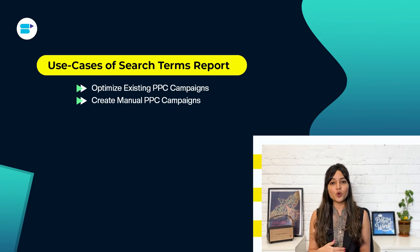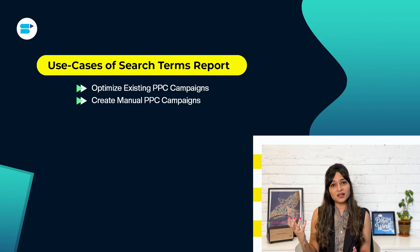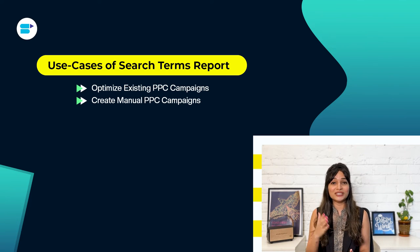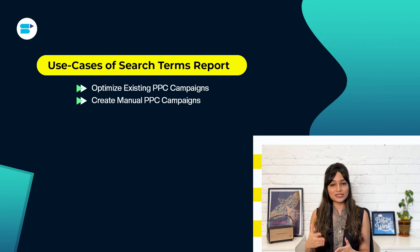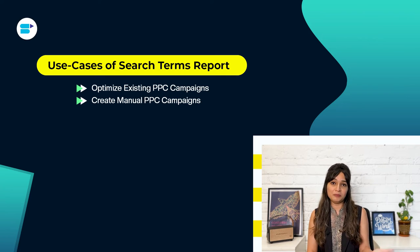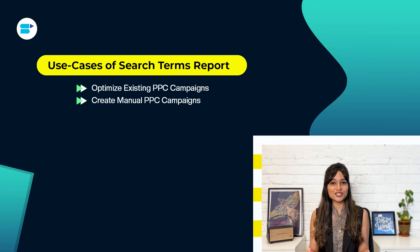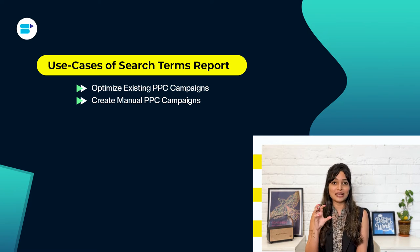Second, create manual PPC campaigns. To get started with manual PPC campaigns, it's a good idea to have a report that covers at least a month. Sellers can gather search term data through automatic campaigns, and this data can then be used based on your brand-specific needs. Identify the keywords that are leading to sales by looking at the total sales metrics. With these critical search terms, you can create your own manual PPC campaigns, giving you the flexibility to fine-tune your campaigns by selecting the type of targeting, keyword match type, and other parameters.